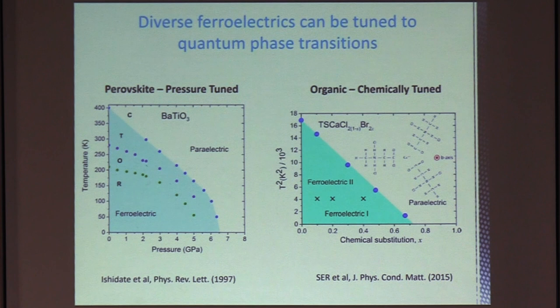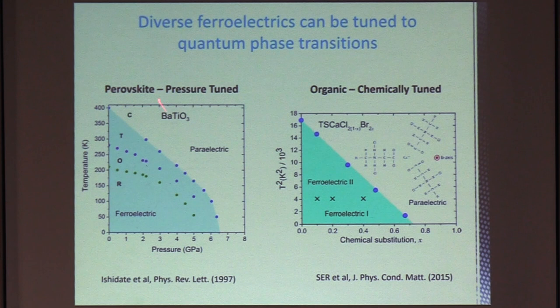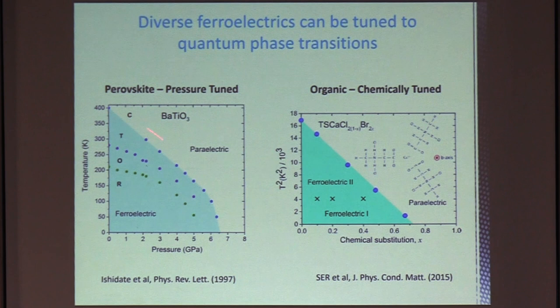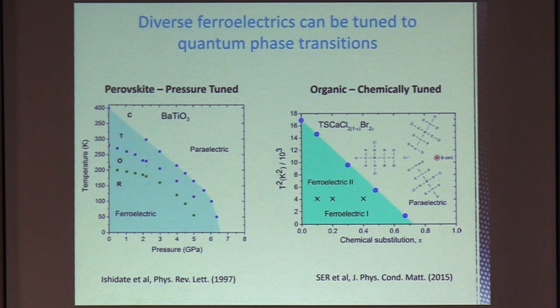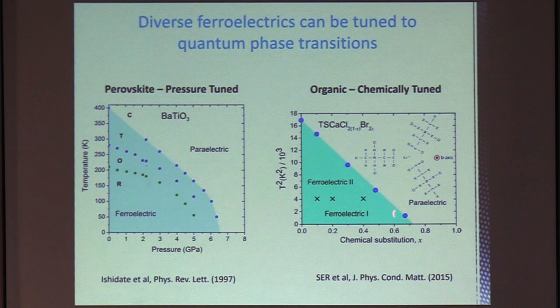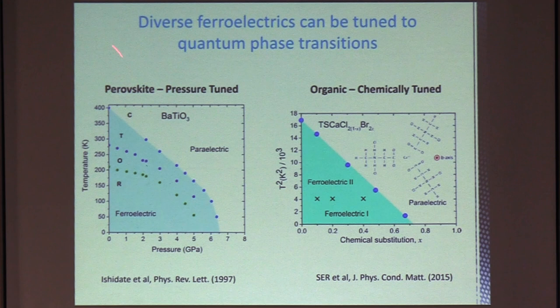So here, I'm showing some examples that diverse ferroelectrics can be tuned to quantum phase transitions. So the example here is perovskite oxide, barium titanate, where around 65 kilobars of pressure is enough to tune TC all the way to zero. There are also organic ferroelectrics, and this one shows the example of trisarcosine calcium chloride,